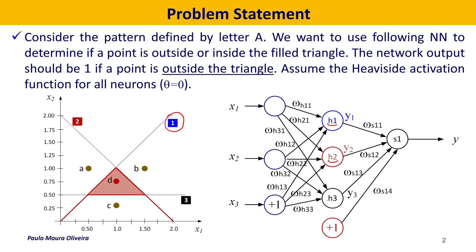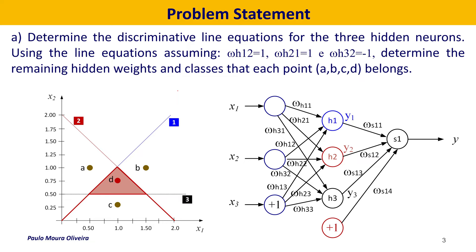We assume that the activation function for each neuron is the Heaviside function, with threshold value theta equals zero. We are provided some weight values, and we want to determine the remaining hidden weights and also the classes to which points A, B, C, and D belong.